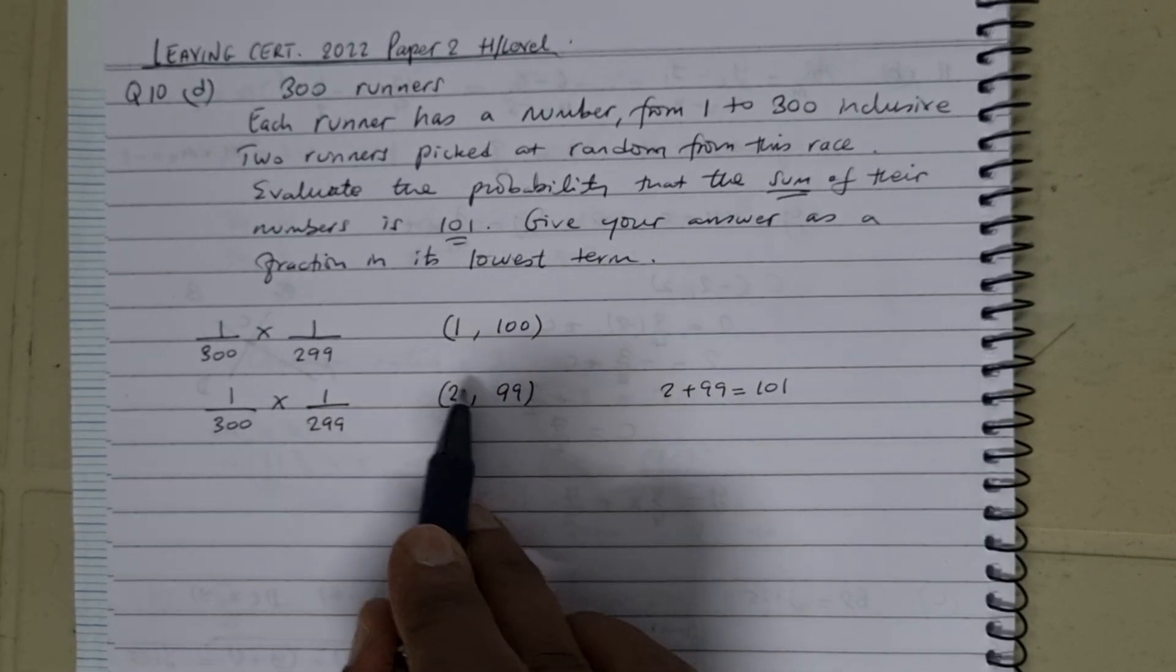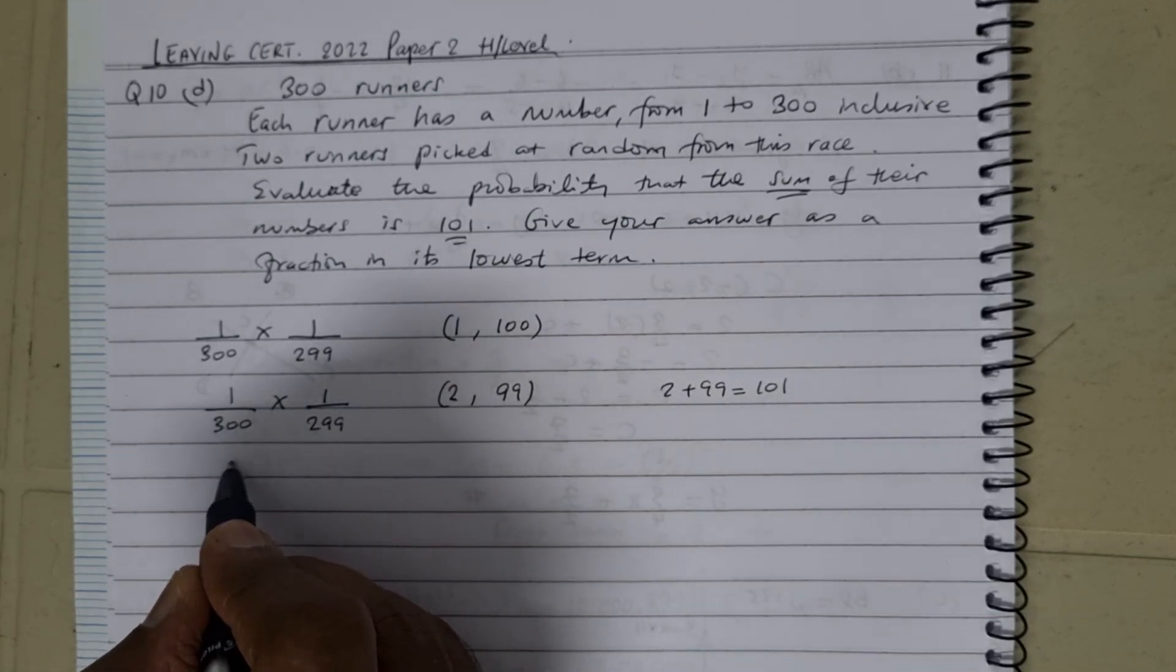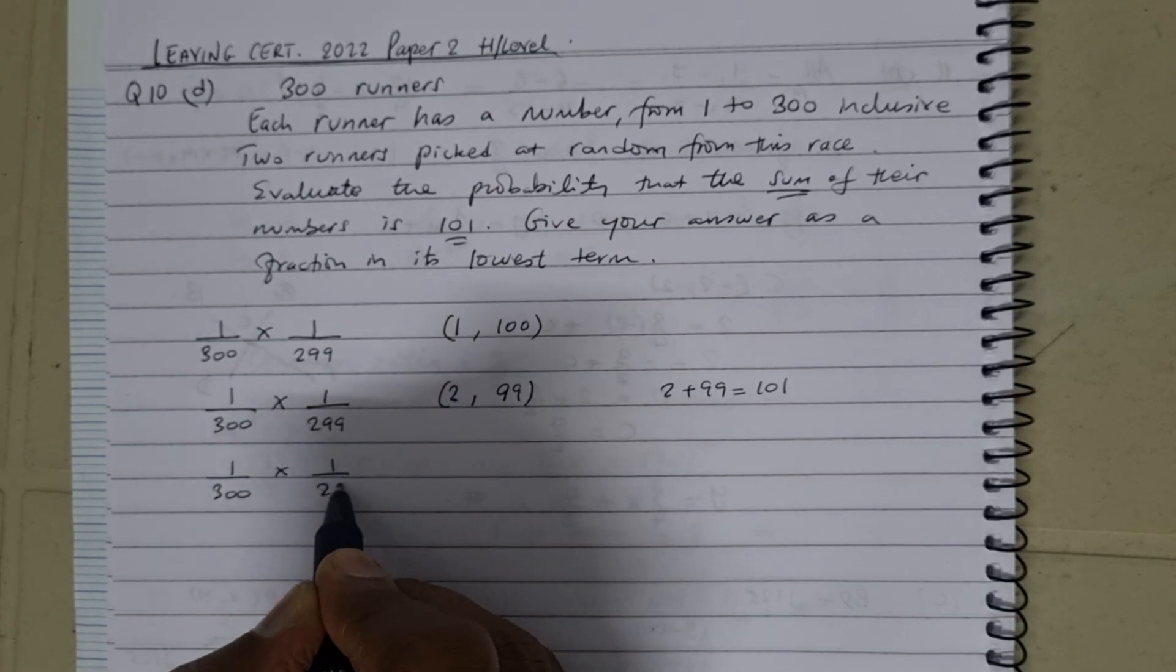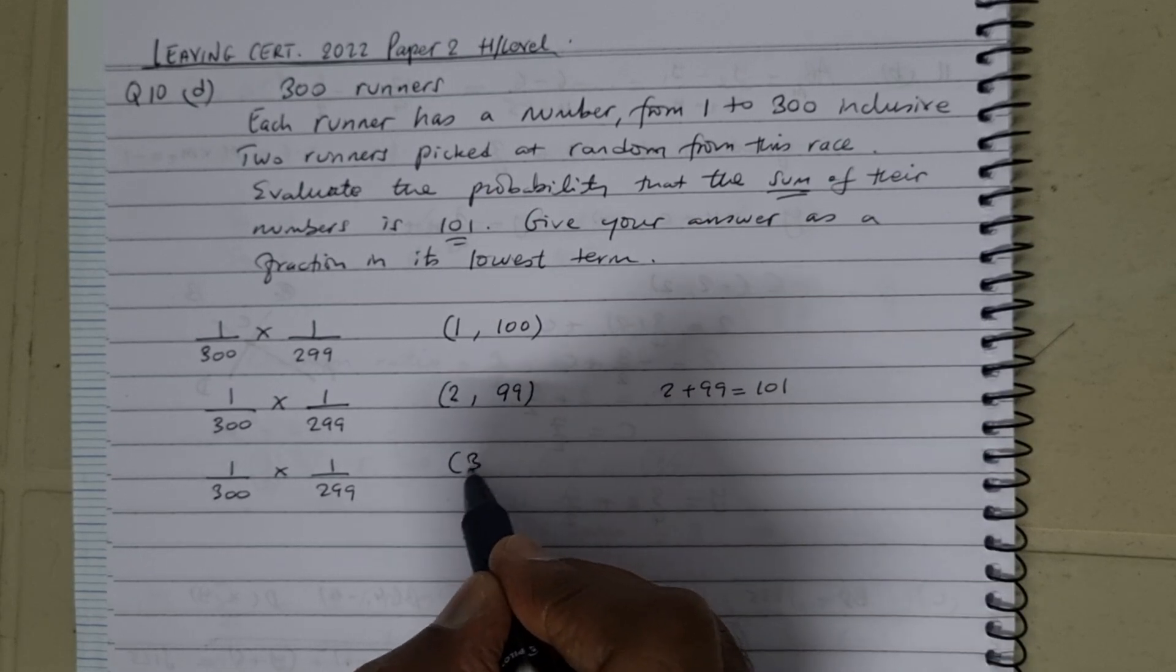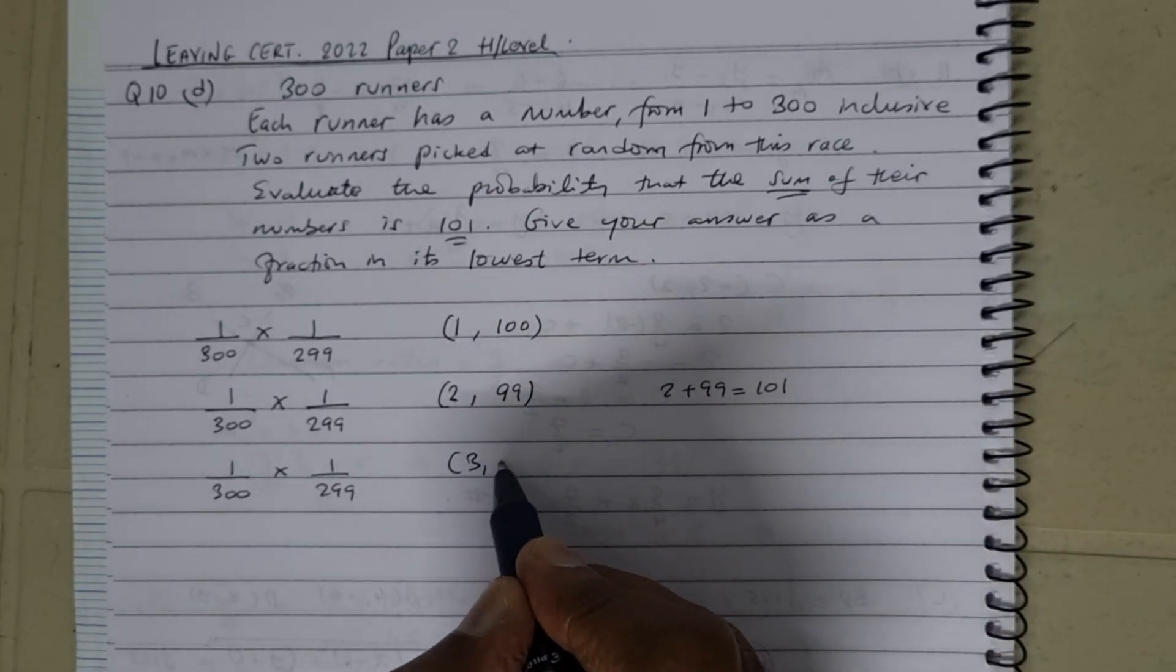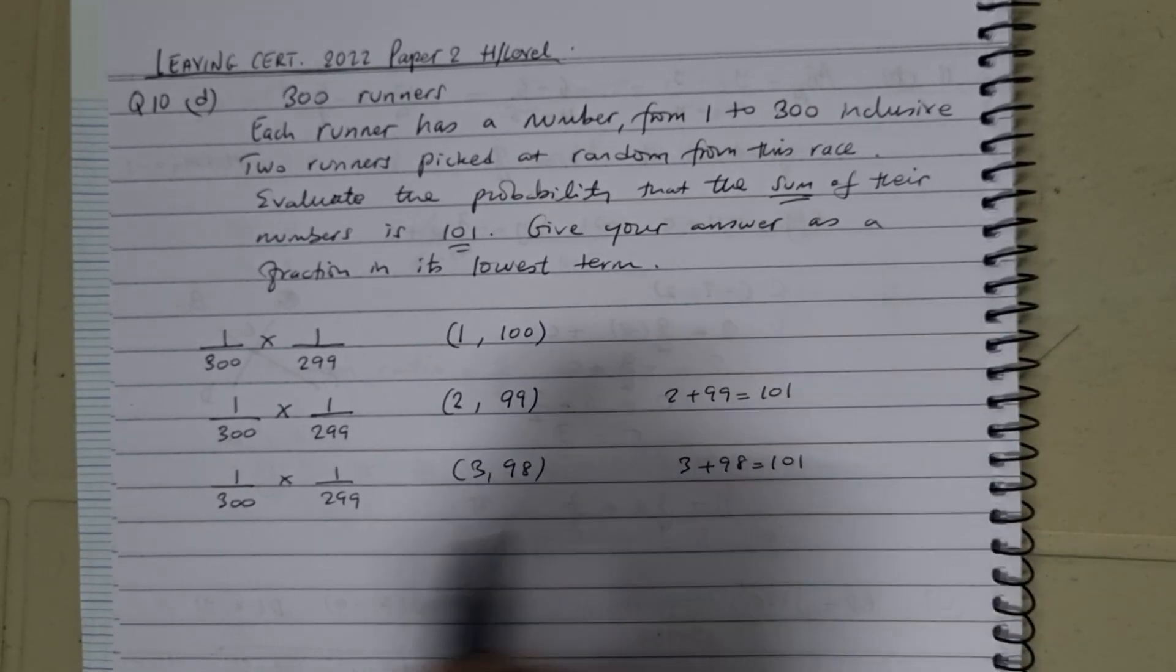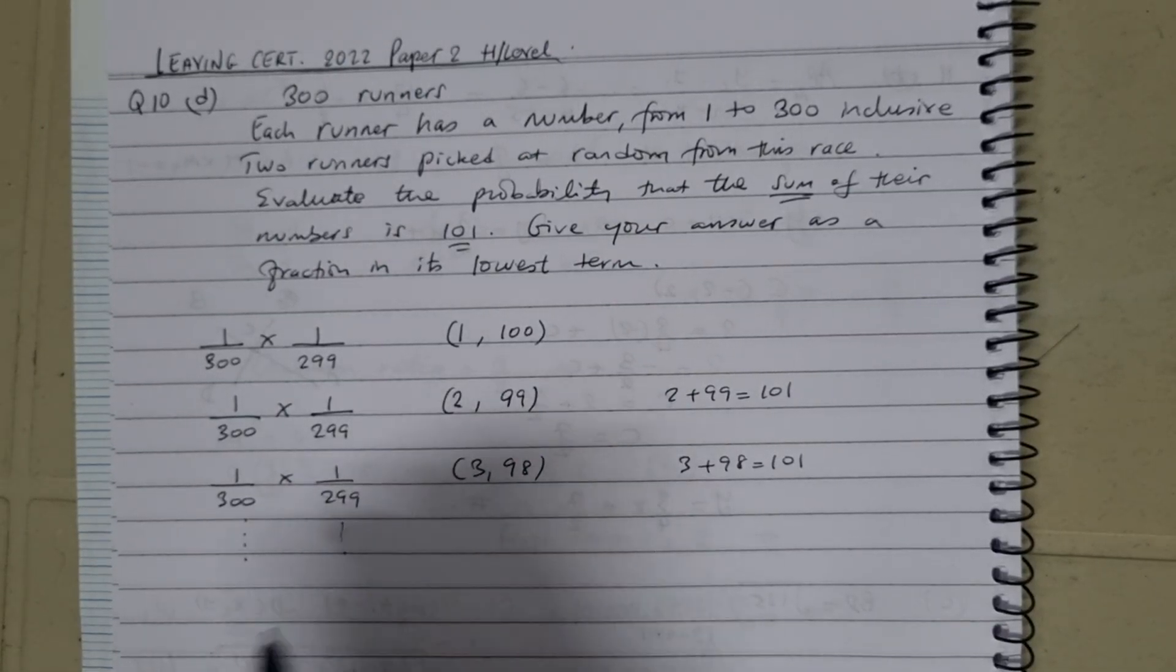In the same way, this pattern goes on. You can have 1 over 300 times 1 over 299. This is for, let's say, you pick one who's got the number 3, then of course the next runner is bound to have the number 98, because 98 plus 3 is 101. And again, it's the same probability.